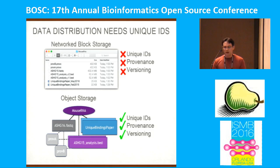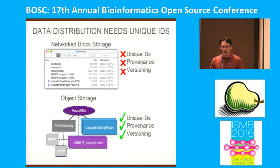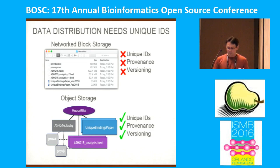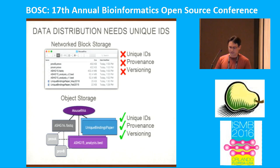One possible way to meet these needs is with an object store. Object stores provide unique identifiers for files stored in them, allowing for the recording of provenance data that is not fragile. Most modern object stores have support for versioning. Building on top of an object store, we can create a file system that is aware of the relationship between our files and meets our data distribution needs.